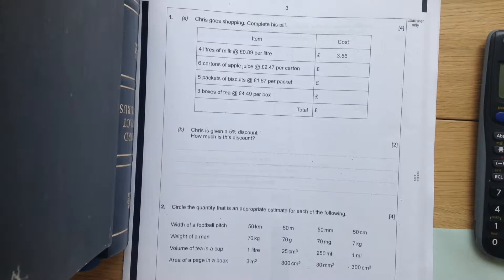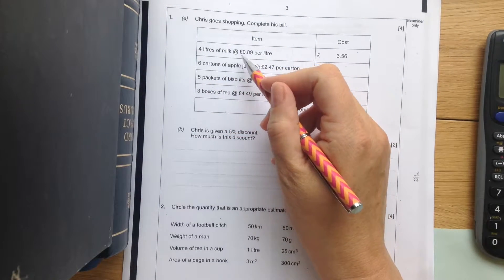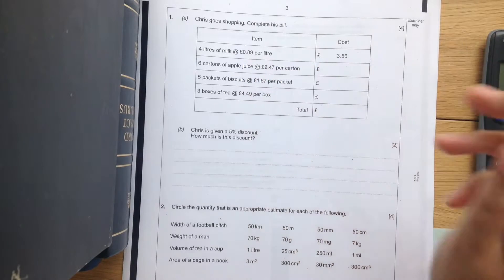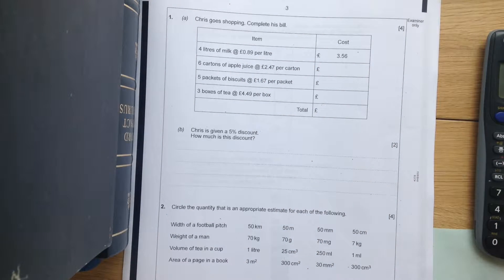Chris goes shopping, complete his bill. Okay, so we've got a table here, we've got to complete the first line. It was four liters of milk at 89 pence per liter, pop that in. I got that answer already, next one.